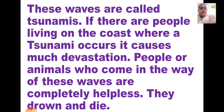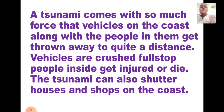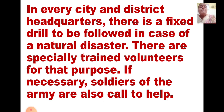These waves are called tsunamis. If there are people living on the coast where a tsunami occurs, it causes much devastation. People or animals who come in the way of these waves are completely helpless — they are drowned and die. The people who live along the sea coast face great danger. A tsunami comes with so much force that vehicles on the coast, along with the people in them, get thrown away quite a distance. Vehicles are crushed, people inside get injured or die, and the tsunami can also shatter houses and shops on the coast.